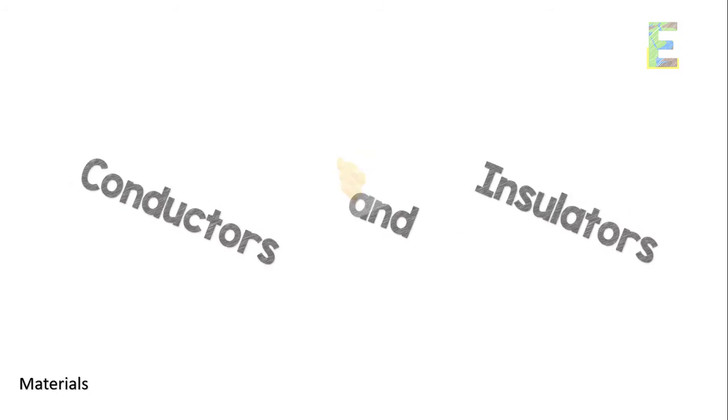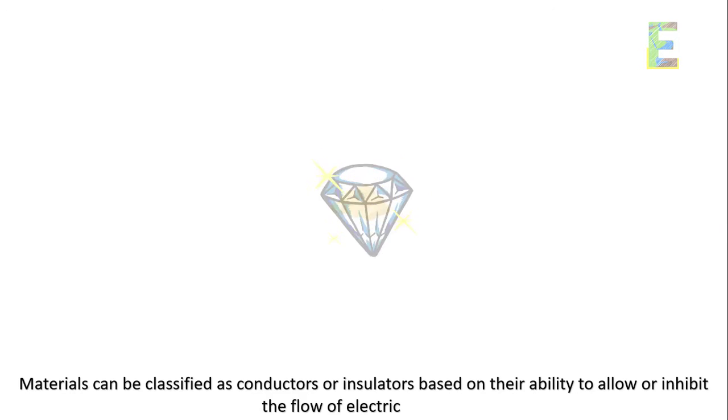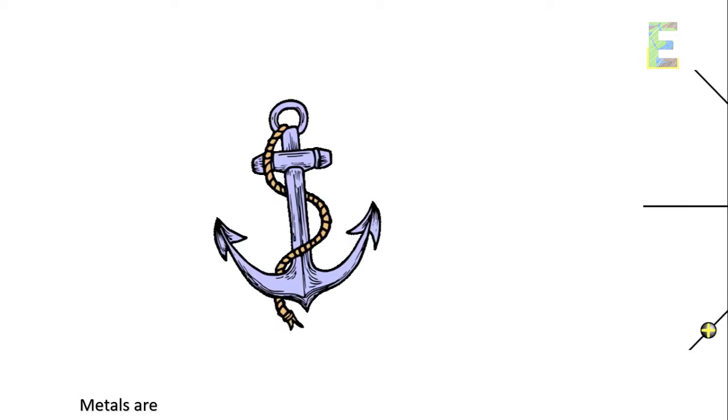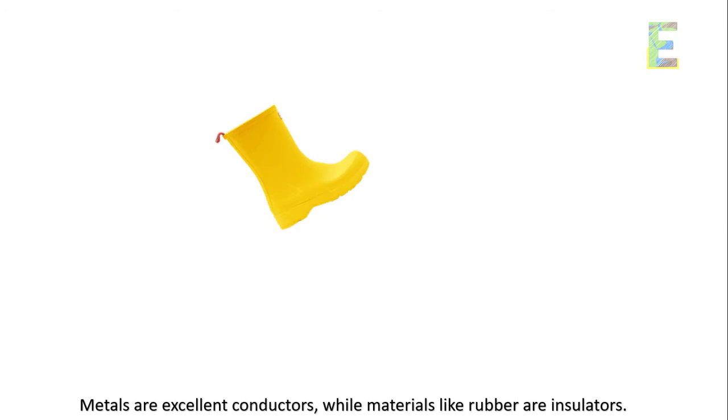Conductors and insulators. Materials can be classified as conductors or insulators based on their ability to allow or inhibit the flow of electric charges. Metals are excellent conductors, while materials like rubber are insulators.